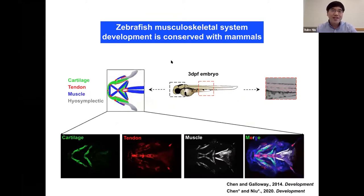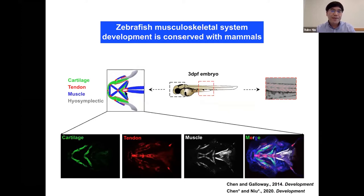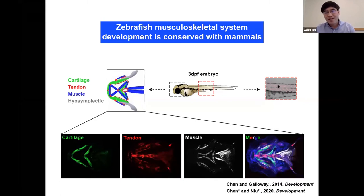To study tendon biology, here in the Galloway Lab we use zebrafish as a model system. We first asked: where is the zebrafish tendon? What I'm showing you is a 3D zebrafish embryo and a cartoon showing the craniofacial structure. I use different colors to label different elements — green is cartilage, blue is muscle, and red is the tendon. The zebrafish also has tendon cells in their trunk region, located at the myoseptum.